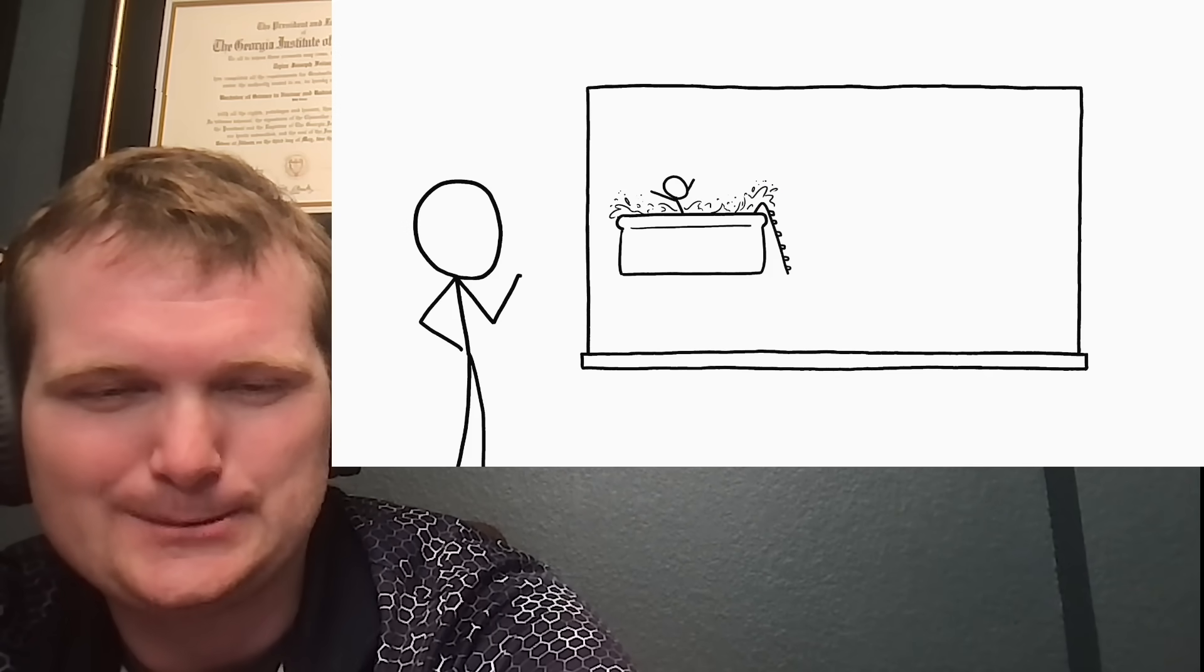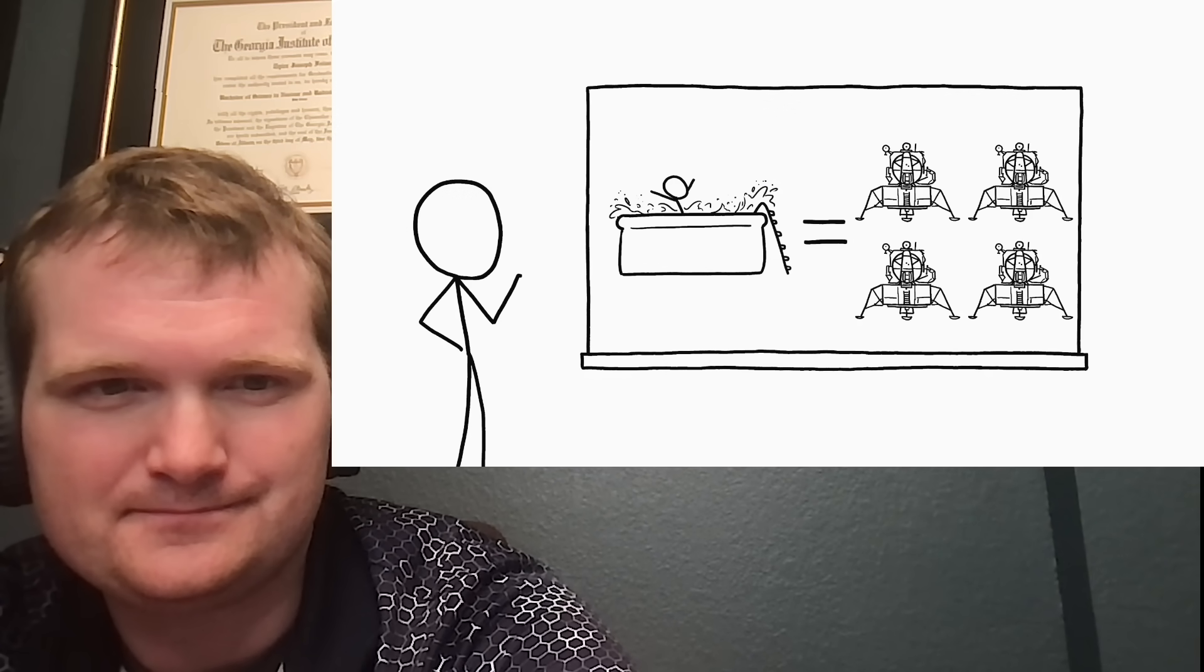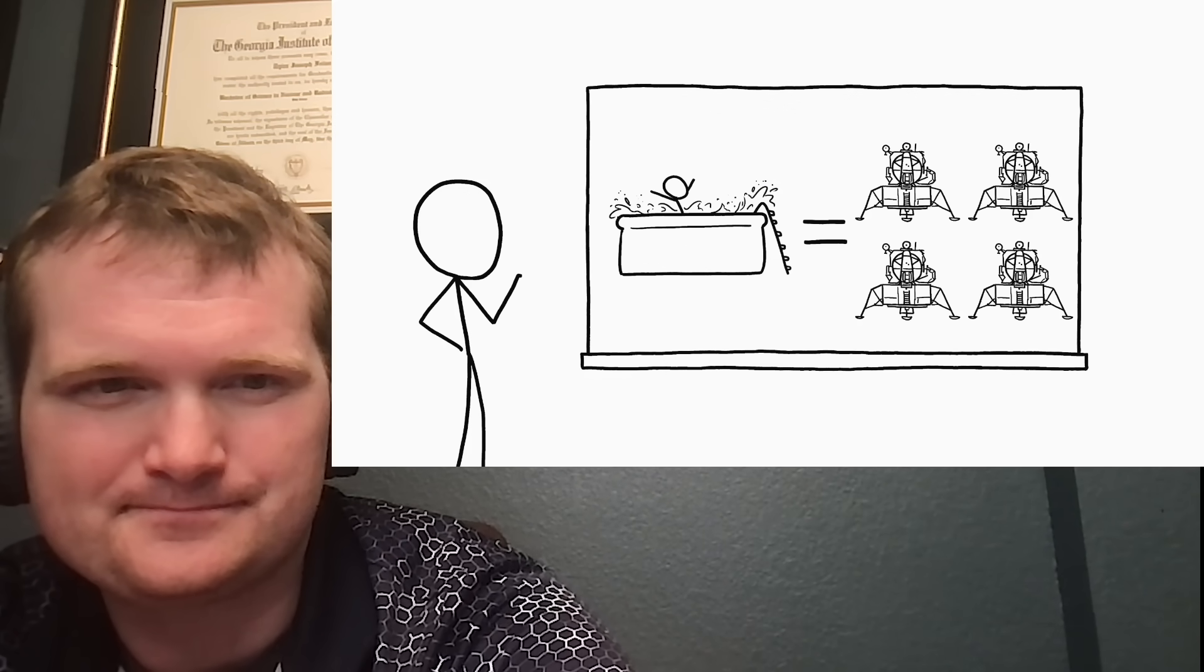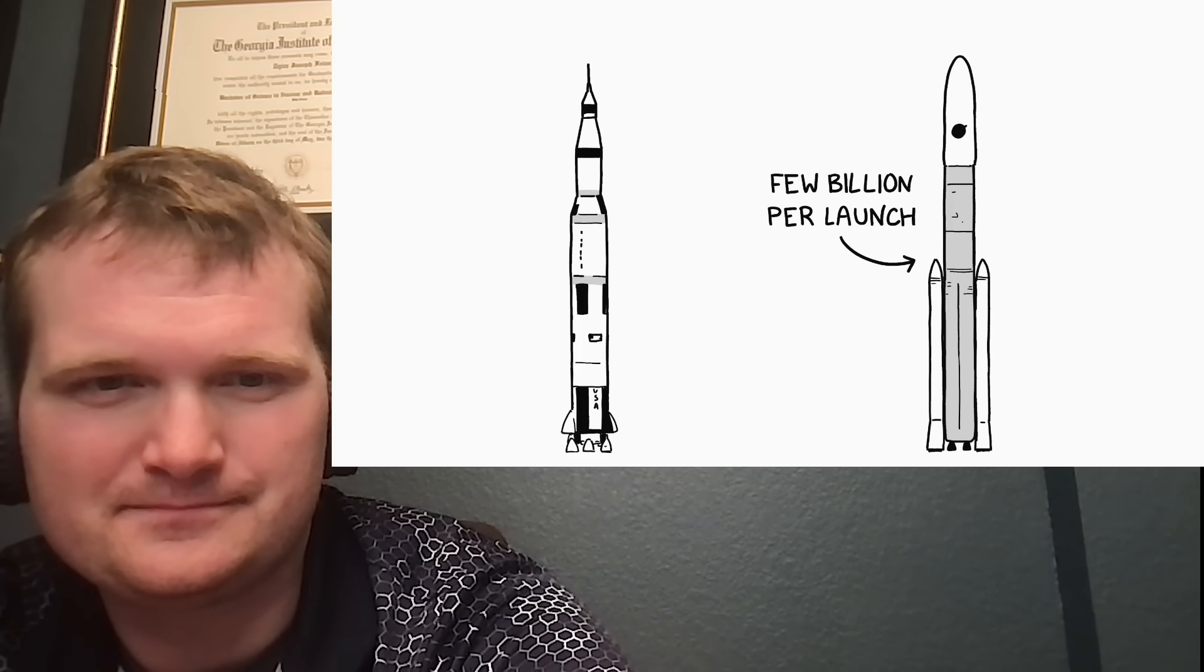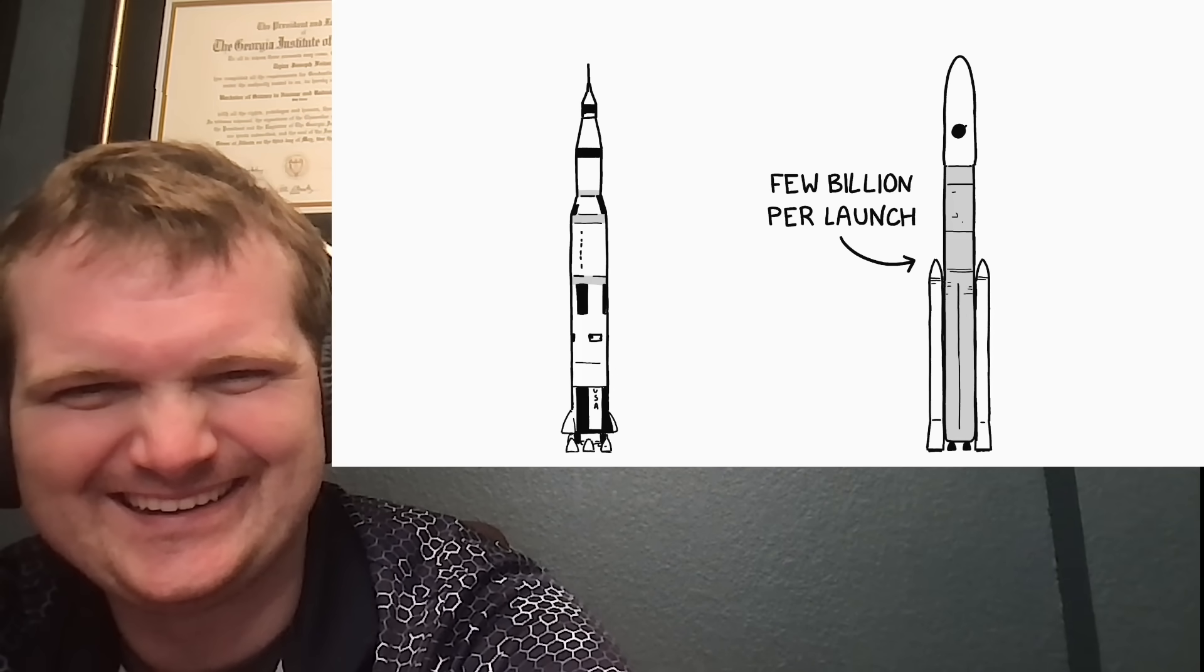A large backyard swimming pool weighs about as much as four Apollo lunar landers. We don't have any functioning Apollo Saturn V rockets, but NASA's SLS launch system is ultimately intended to carry about the same amount as a Saturn V for the cost of a few billion dollars per launch, and a private space company would be even cheaper.